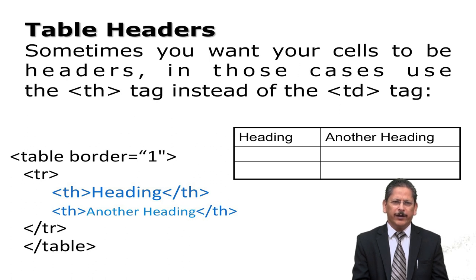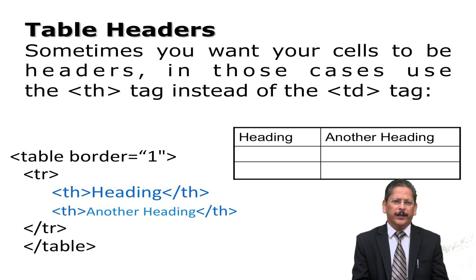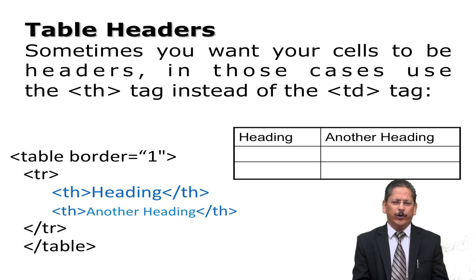We start the table with the table tag and we can also mention the table border attribute — for example, table border equals to one, two, or three. We can write different values for the border attribute, and accordingly it will show the border thickness. Here inside the table tag we have a table row, and in that row we have two headings: 'Heading' and 'Another Heading'. These values are encapsulated in TH tags, and you can see the output in the same slide displaying 'Heading' and 'Another Heading'.